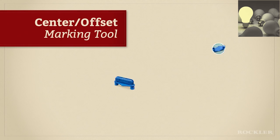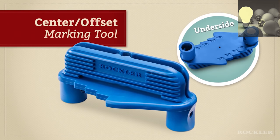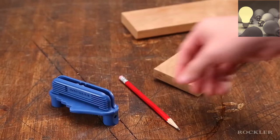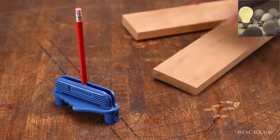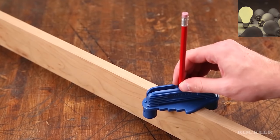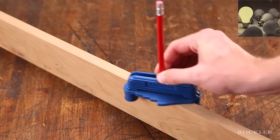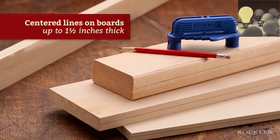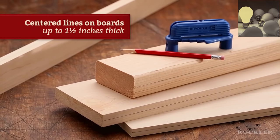The Rockler Center Offset Marking Tool lets you take care of two tedious tasks with one convenient device. The first is drawing a center line on the edge of a board. Just put a common number two pencil in the center hole, place the tool on the board, twist it until the posts make contact, and then slide. Just like that, you have a perfectly centered line on boards up to 1.5 inches thick.